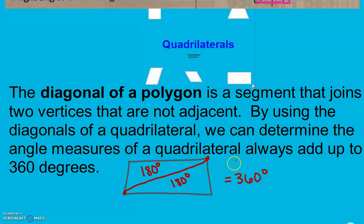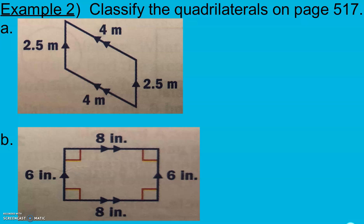Quadrilaterals' angles always add up to 360 degrees. In example 2 here, we're going to classify the quadrilaterals on page 517. In A, we see that we have two sets of parallel lines. Here's one arrow, so those are parallel, and two arrows, so these are parallel. Our side lengths and our top and bottom are different, so it's not a rhombus. We don't have 90 degree angles, so it's not a rectangle or square. This is just a parallelogram.